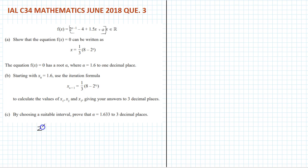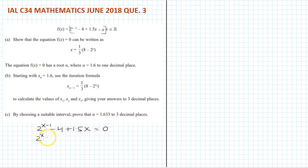We are going to write 2 to the power x minus 1, minus 4, plus 1.5x equals 0. We have to separate this because it is not simply 2 to the power x minus 1. So 2 to the power x multiplied by 2 to the power minus 1 — when we multiply the same base we add the powers — minus 4. This is 1.5, and I can see a 3 here, so I can write 1.5 as 3 over 2, giving 3 over 2 times x equals 0.